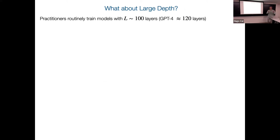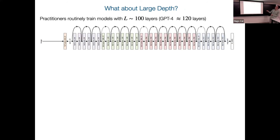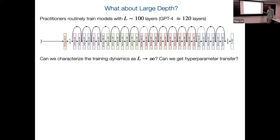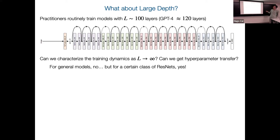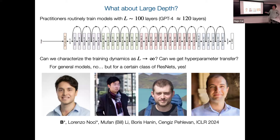What about large depth? Practitioners are also scaling depth. Some models have hundreds of layers. Can we characterize training dynamics in an infinite depth limit? Another goal: can we find a parameterization to get hyperparameter transfer — identify hyperparameters in a small model and have those same hyperparameters still work in a much larger model? For general feedforward networks, we don't know how to do infinite depth limits. But for ResNets, we and some others have developed ways of thinking about limits for infinite-depth ResNets.